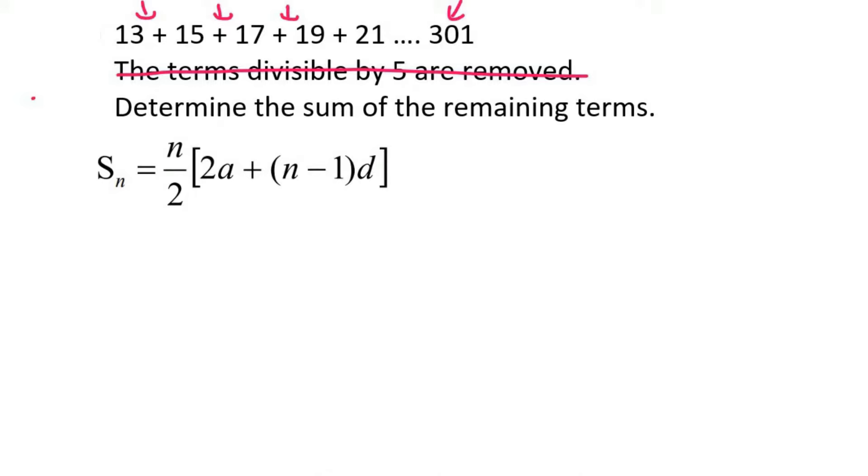So what we do, we have a little trick. We know that the last term is 301. So we use the TN formula. And then what we do is we know that the last term is 301. So we say 301 equals to A, which is 13, plus N we don't know. And then D is the difference of 2.